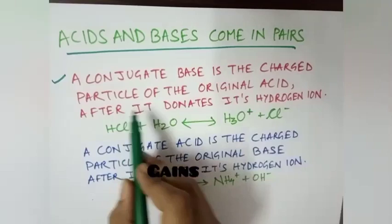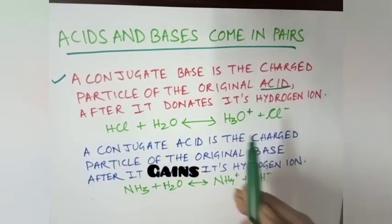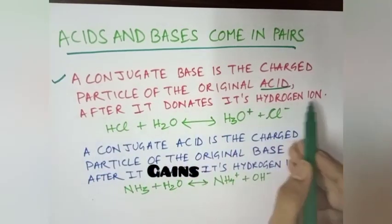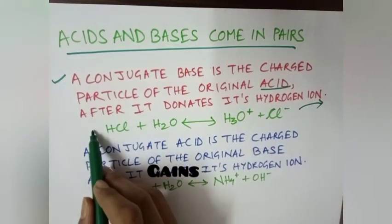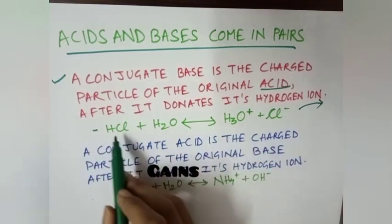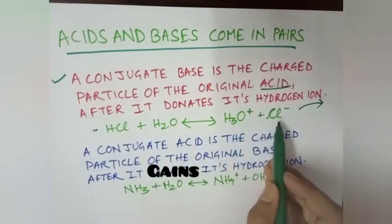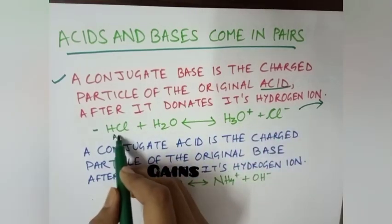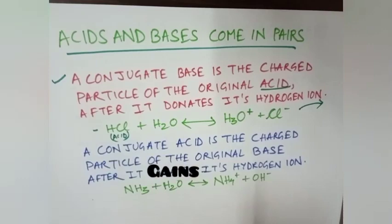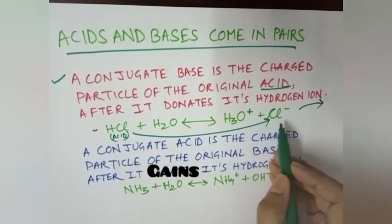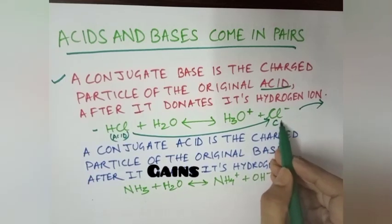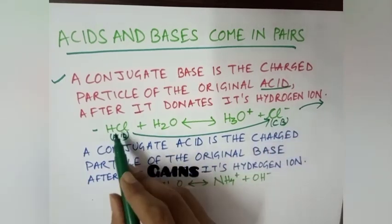A conjugate base is the charged particle of the original acid after it donates its hydrogen ion. Let's take an example: HCl is the original acid. When it reacts it gives H3O+ and Cl-. When HCl donates the hydrogen ion it forms Cl-. The Cl- will be its conjugate base.